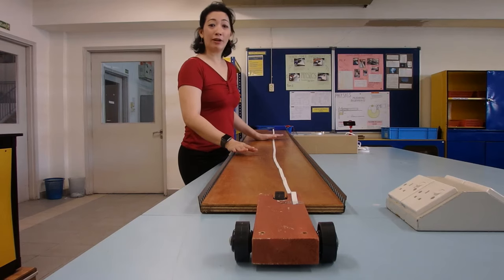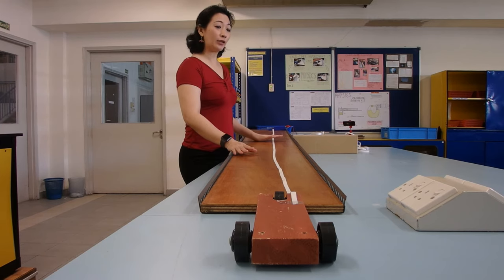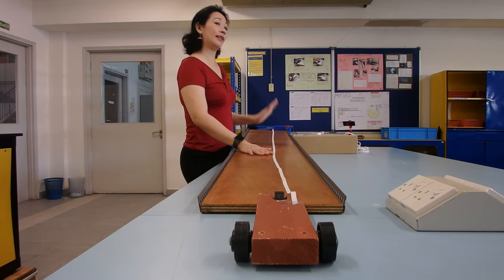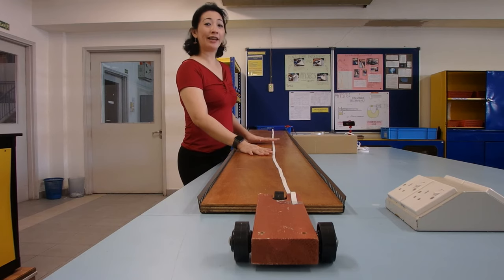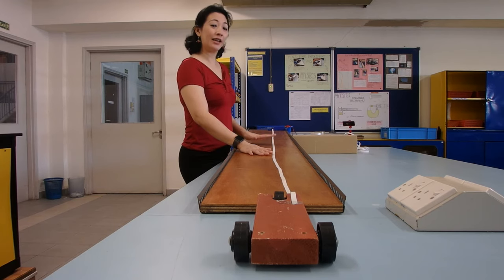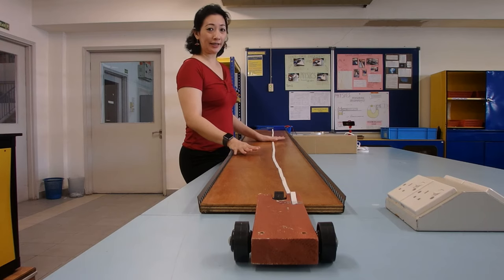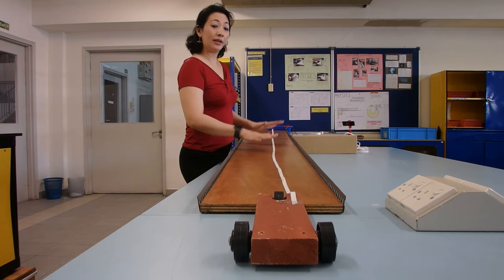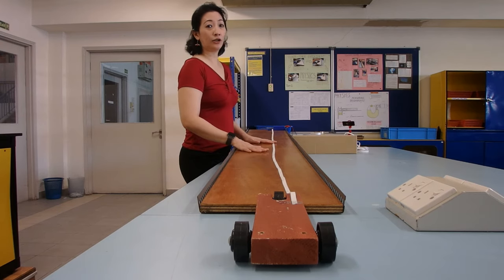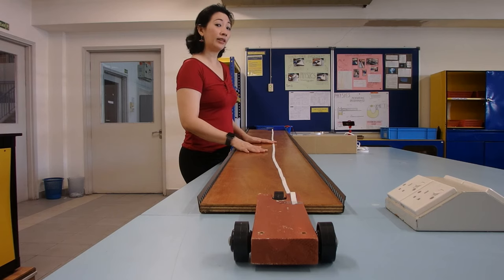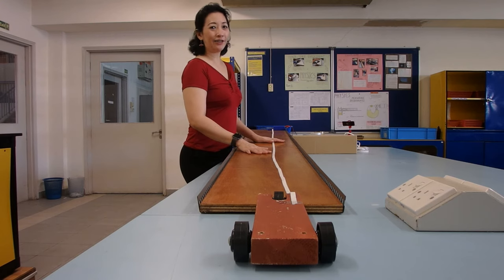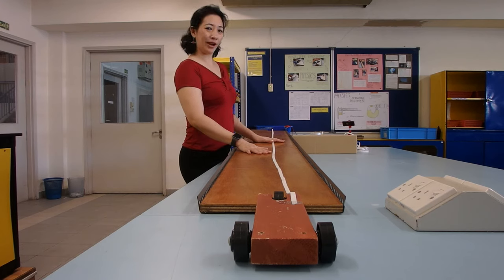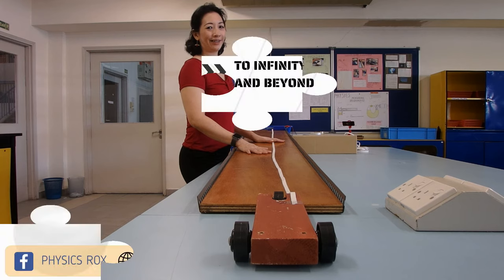This is how we conduct a simple trolley experiment to study motion using the ticker timer with the ticker tape. I hope you have found this video helpful in seeing how an experiment can be conducted in the school lab with all these apparatus. In order to interpret the results from the ticker tape to find out the value of the displacement, velocity and acceleration, I'll do that in a separate video. Thank you for watching. Don't forget to click like and remember to subscribe to my YouTube channel, Physics Rocks.